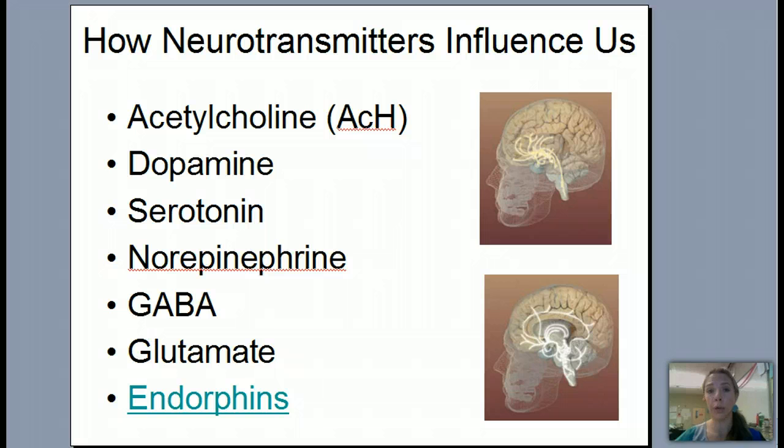But here are the neurotransmitters that have the biggest effect on us, and we'll have a separate lecture on that. So we're going to talk about acetylcholine, dopamine, serotonin, norepinephrine, GABA, glutamate, and then endorphins. Bring any questions you have to class, and I'll see you later.